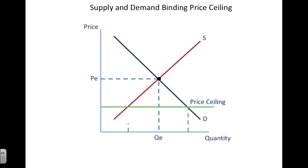Therefore, you will have an imbalance in that the price will be artificially too low. We can see in this example that the quantity demanded is greater than the quantity supplied. Anytime QD is greater than QS, you will end up with a shortage.